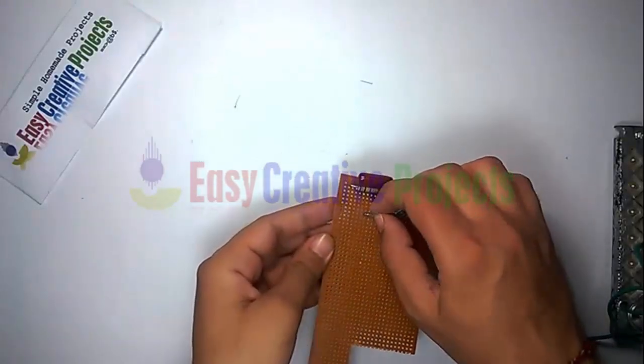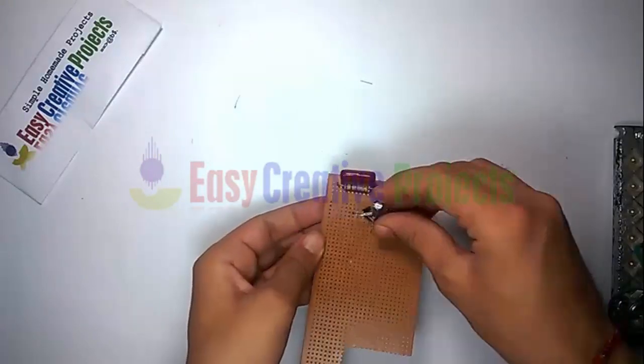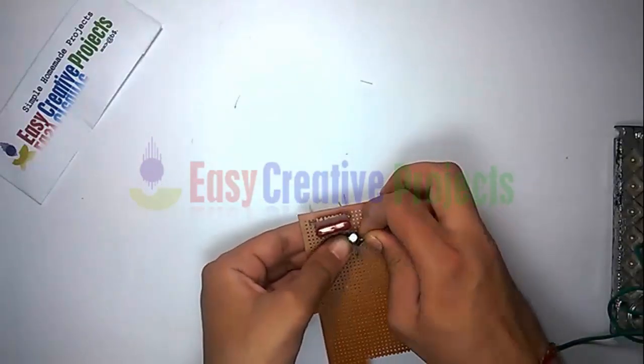Now connect all spare parts on PCB boards. Connect 400V capacitor using circuit diagram.